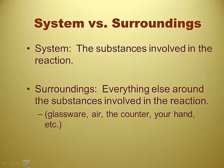So in order to discuss this system versus surroundings, we have to discuss these two definitions. As far as we're concerned in chemistry, a system is going to be the substances involved in the reaction, whereas the surroundings is going to be everything else that's around that reaction.